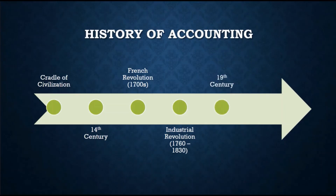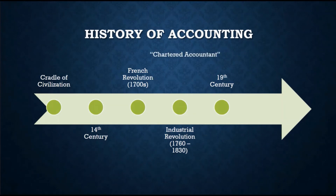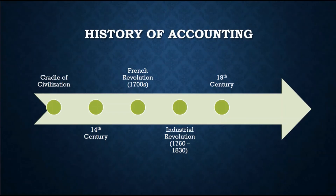In the 19th century, the modern formal accounting profession emerged in Scotland in 1854, when Queen Victoria granted a royal charter to the Institute of Accountants in Glasgow, creating the profession of the chartered accountant. In the late 1800s, chartered accountants from Scotland and Britain came to the US to audit British investments, eventually setting up accounting practices. The first national US accounting society was set up in 1887 — the American Association of Public Accountants, forerunner to the current AICPA.